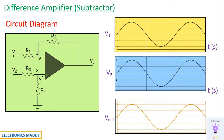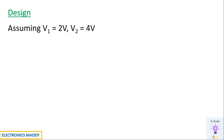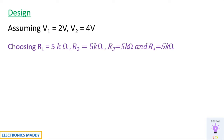Now we look into the design procedure. Every design requires some requirements and assumptions. I'll be assuming V1 and V2 to be 2 volts and 4 volts respectively, and I'll be choosing R1, R2, R3, and R4 to be the same value.